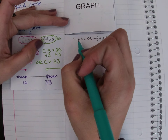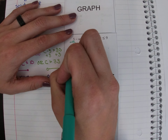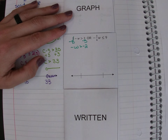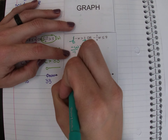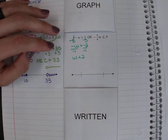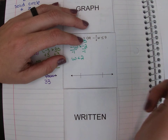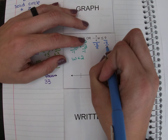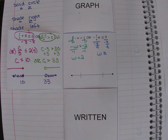Let's solve this next one. First, solve the one on the left — subtract 5 first. That leaves us with negative w is greater than negative 2. We still have that negative, so we divide by negative 1. Remember, if we divide by a negative, we have to flip that inequality sign.